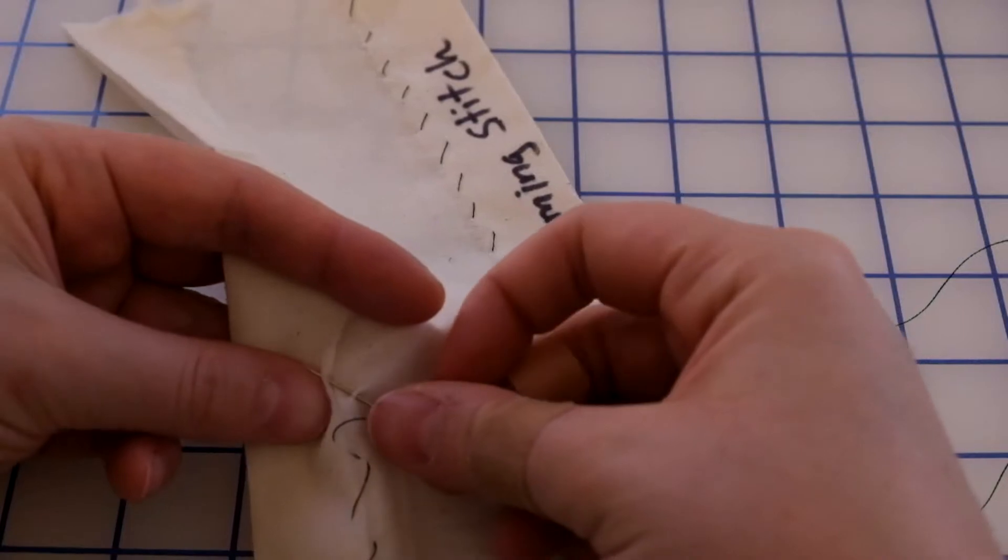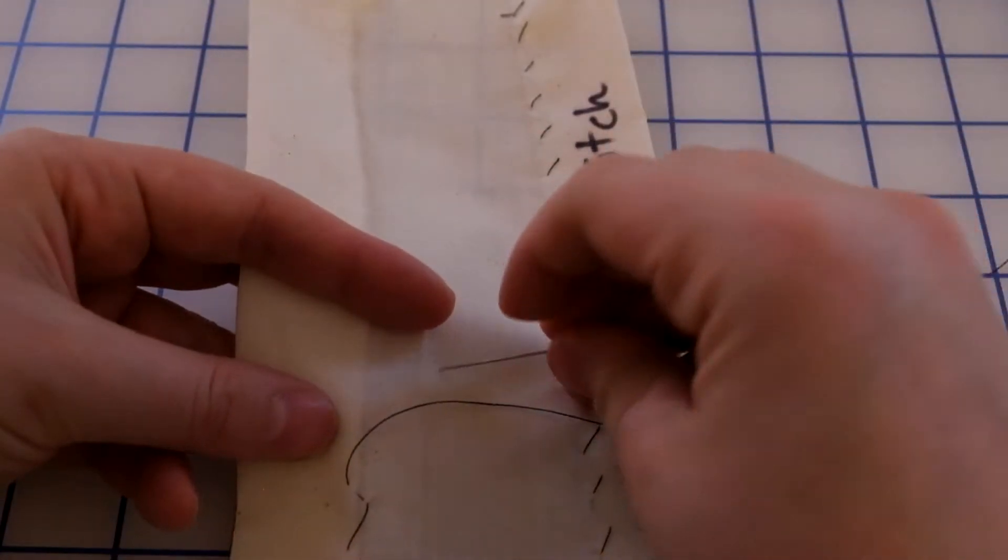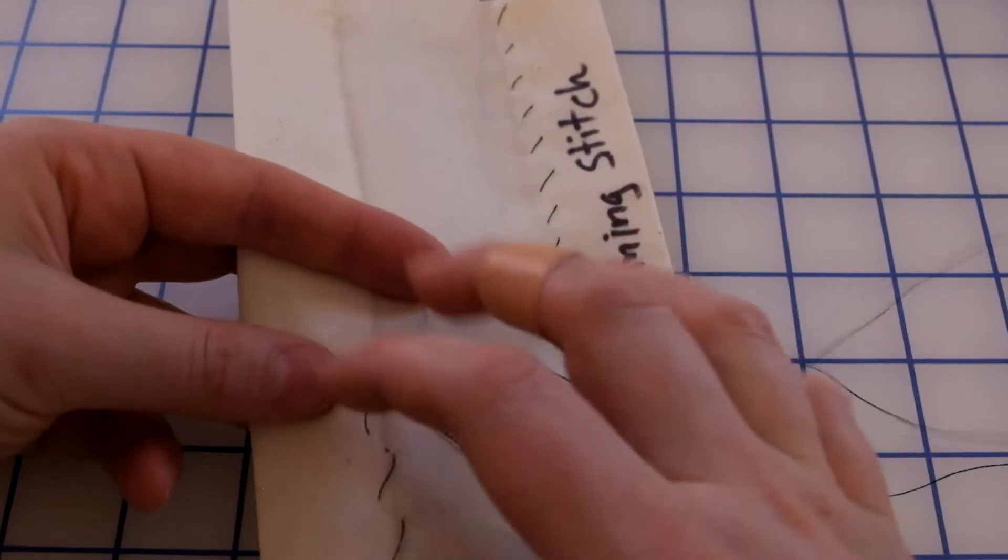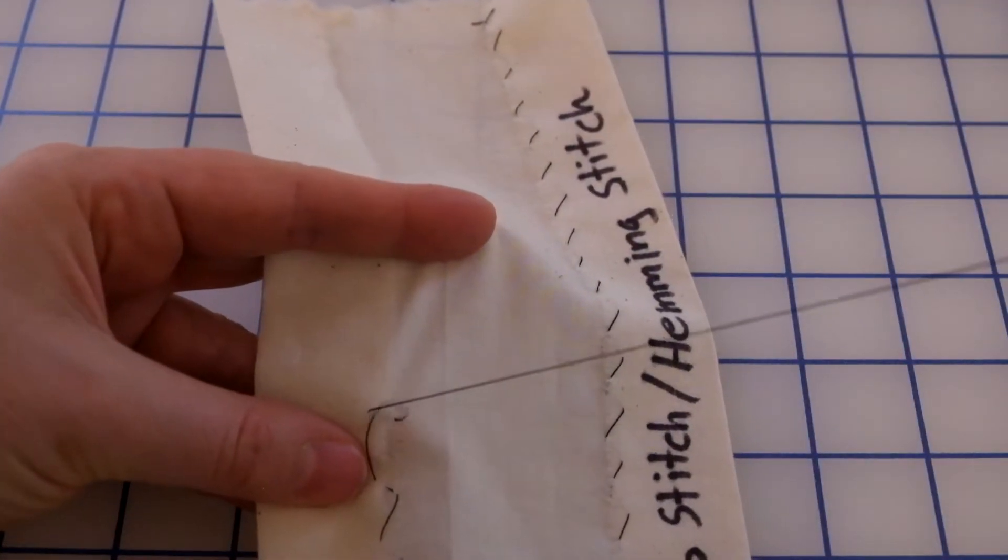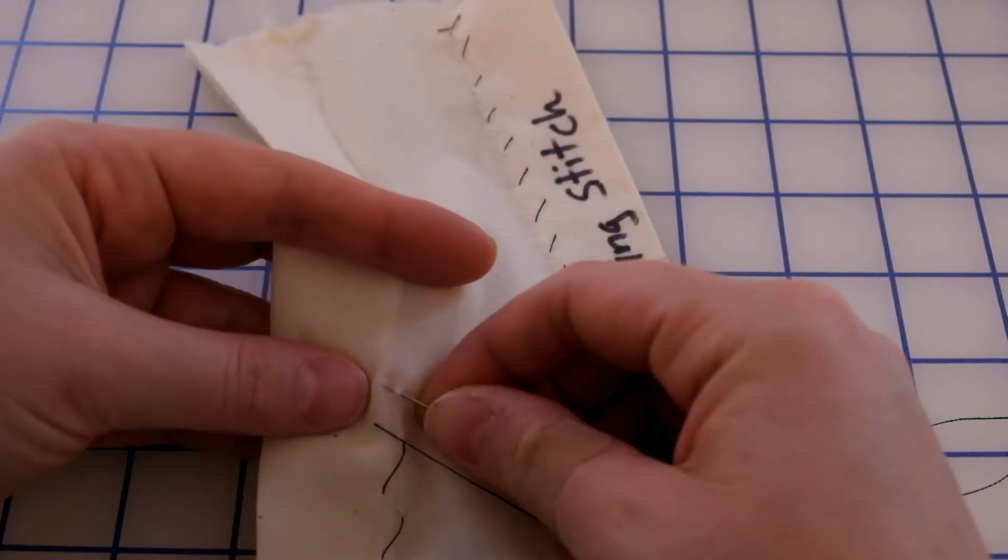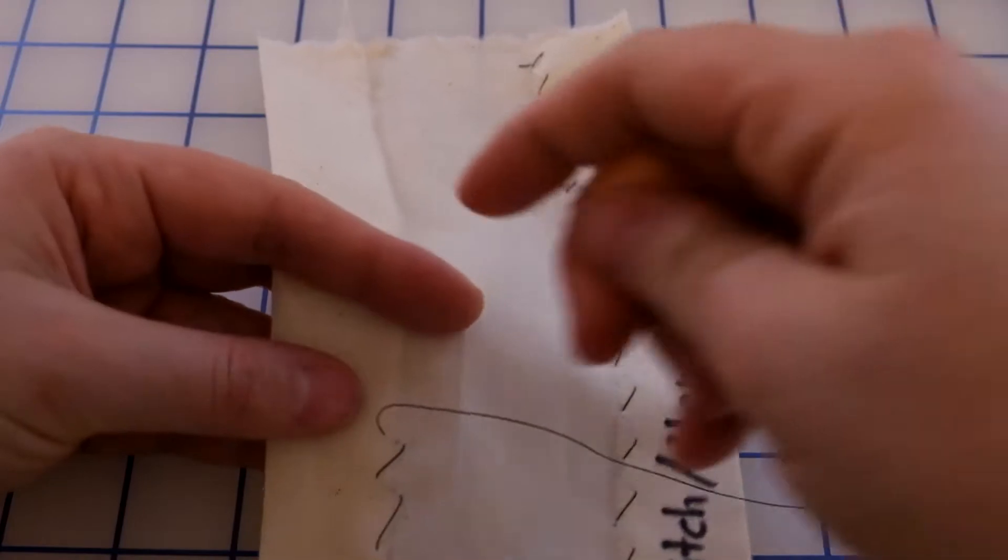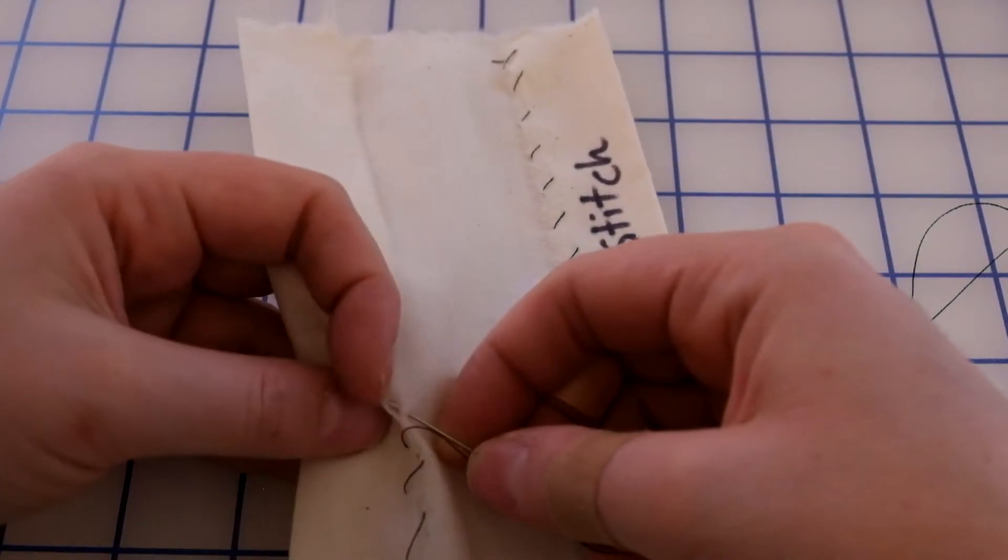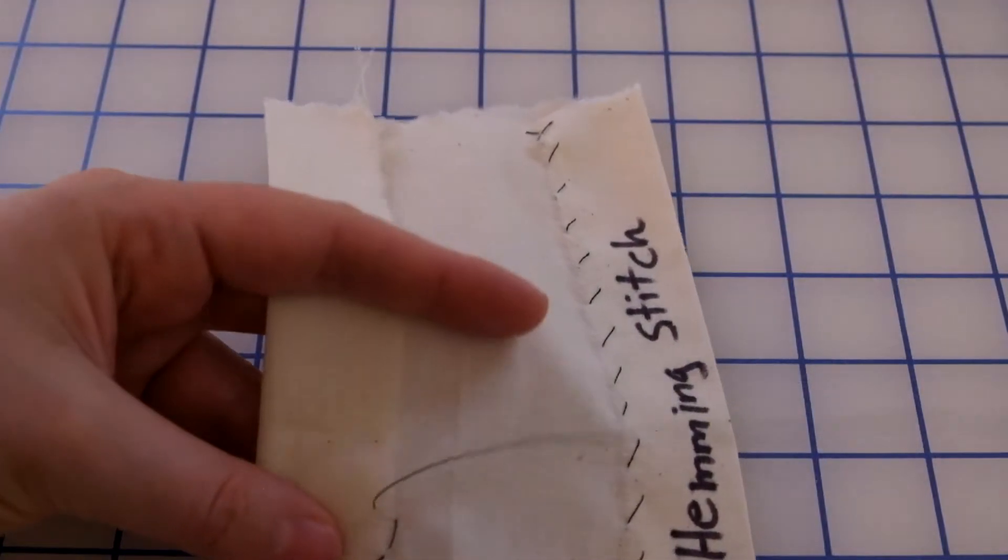When you start out, your stitches on the front might be pretty large, but as you get the feel for the stitch, you can fine-tune how big your stitches are, especially on the back of the fabric that you don't want to be seeing. So you're just going to continue stitching and then coming up through the folded part of your fabric.